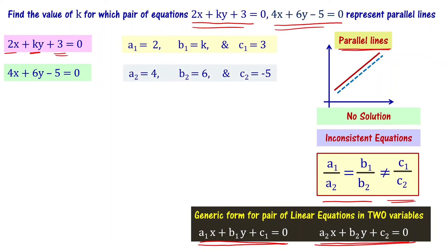Now, let us find ratios of these equations. So, a1 by a2 equal to 2 by 4 equal to 1 by 2. b1 by b2 equal to k by 6. c1 by c2 is minus 3 by 5. As per this relation, a1 by a2 equal to b1 by b2.